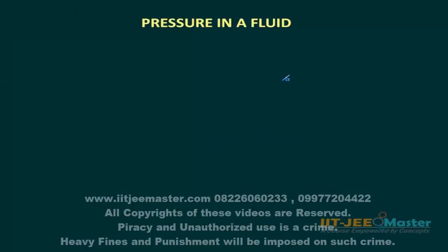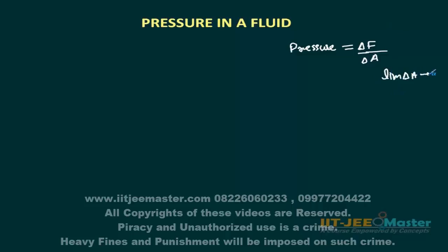Now, pressure in a fluid. We know the definition of pressure: pressure is the force exerted per unit area, that is force per unit area. If we want to be precise, we take delta F and delta A where delta A is very small — we can say the limit as delta A tends to zero. If you know the value of force at a very small area, that gives the exerted pressure: delta F divided by delta A.